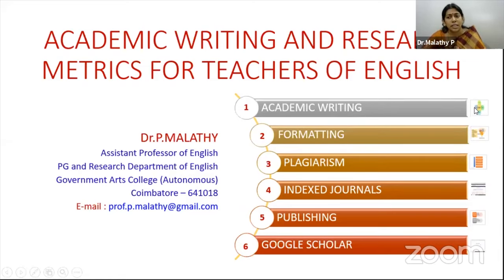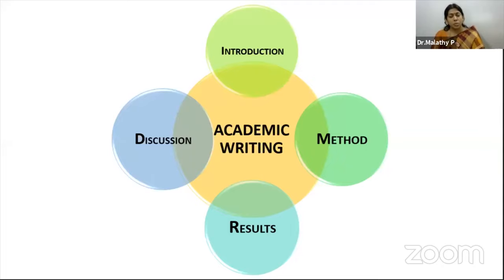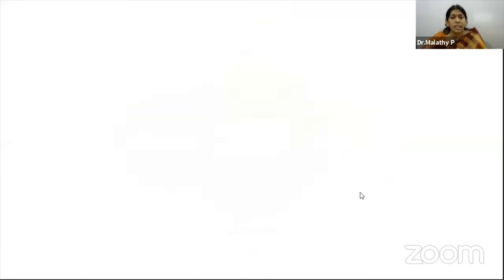A scholarly writing should have these components: an introduction, a method, results, and discussion. Whether you belong to the science stream or arts stream, irrespective of that, your scholarly writing should follow this IMRD structure. When we talk about introduction, method, results, and discussion, how do we go about writing such things?